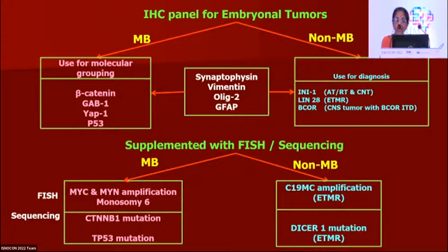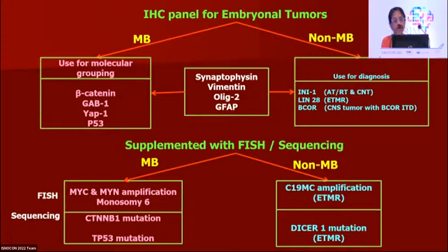Some WNT-subtype tumors show p53 mutation but do not carry the same poor prognostic outcome as SHH p53-mutant. For ETMRs, about 5% show DICER1 mutation detectable by sequencing. This IHC panel, along with FISH and sequencing, provides the practical applicability for this complicated group of embryonal tumors — both diagnostic and prognostic. DNA methylation and gene expression profiling remain the gold standard per WHO 2021.